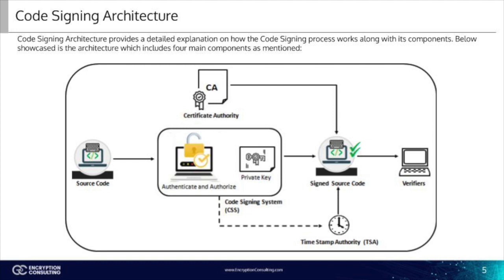Verifiers: the end user using the code digitally signed by the publisher first initiates the process of verifying the signature. In general, verifiers are used to perform this step of validating the signatures and the timestamp, if that is included.